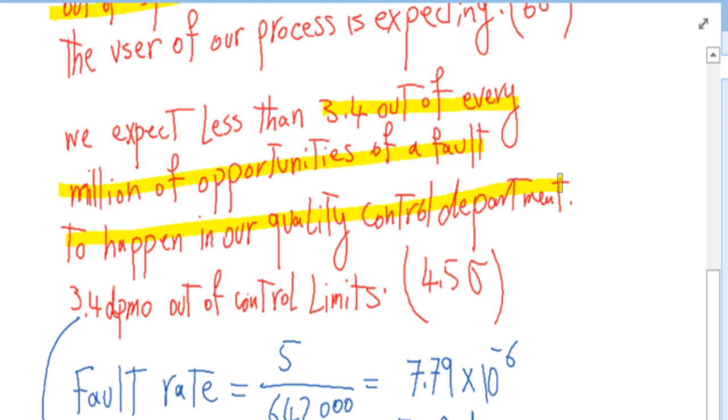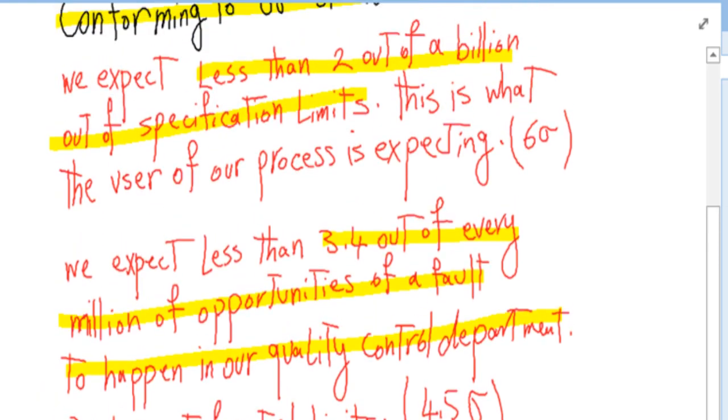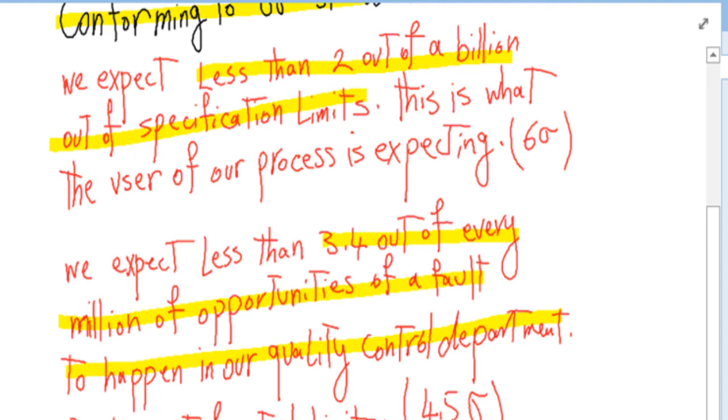And remember that the control limits are set to be at 4.5 standard deviations, and our specification limits—what the customer expects—are set to be at six standard deviations.